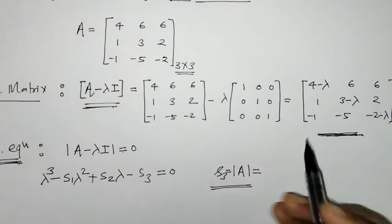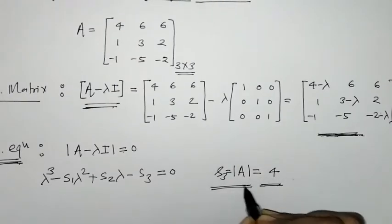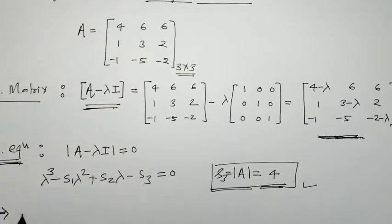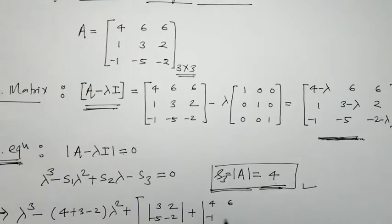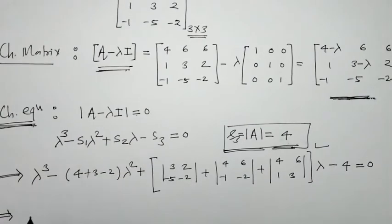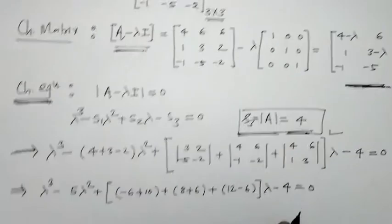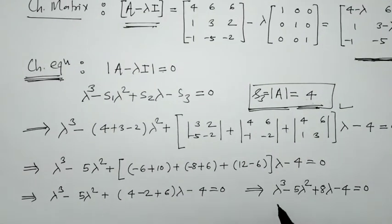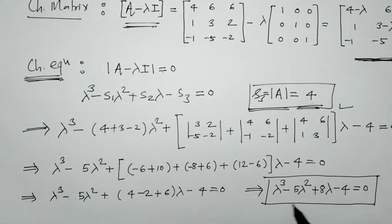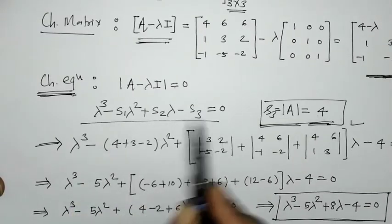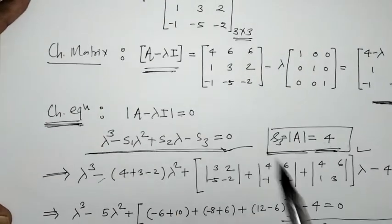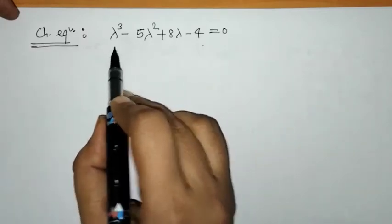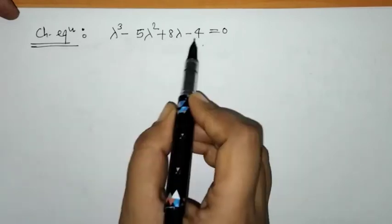S3 is the determinant of the given matrix, and we find this determinant equals 4. Now we put S1, S2, S3 into the characteristic equation to get the characteristic equation for the given matrix. This is a cubic equation, and we now have to find its roots.